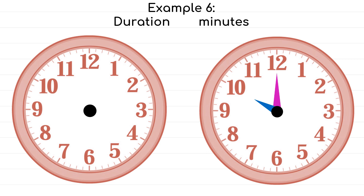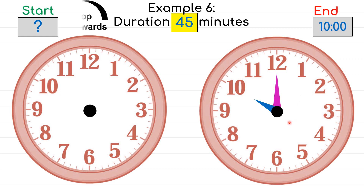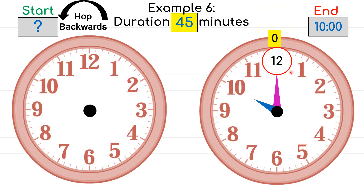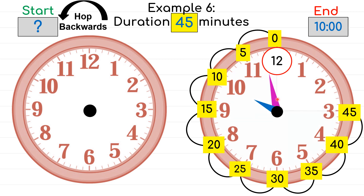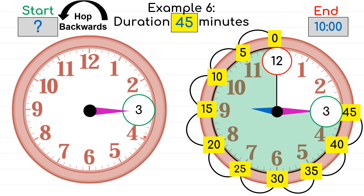On to our final example. We have to find the starting time and we're given a duration of 45 minutes and an ending time pointing at 10 o'clock. Remember, to find the starting time we have to hop backwards. The minute hand is pointing at 12, so skip count backwards: 0, 5, 10, 15, 20, 25, 30, 35, 40, 45. Moving the minute hand 45 minutes backwards, the clock is now showing 9:15. So the starting time is 9:15.